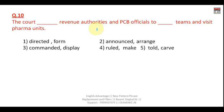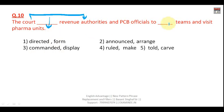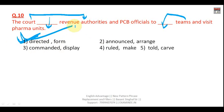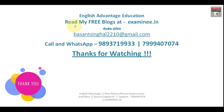Question ten: 'The court _____ revenue authorities and PCB officials _____ teams and visit pharma units.' The court always gives orders — the equivalent word is order, command, or direct. PCB officials were directed to form teams and visit the pharma unit for investigation. So here your correct answer is the first option — 'directed' and 'form.'